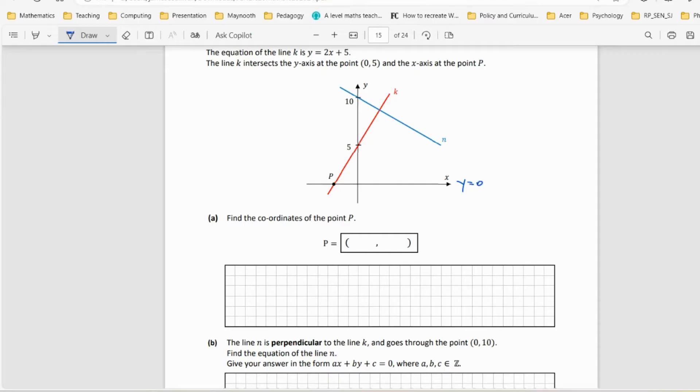Down here y would equal 0. So if we set the k equation, 2x + 5 = 0, then 2x = -5, therefore x = -5/2. So this point here is going to be (-5/2, 0) since we know y is 0.